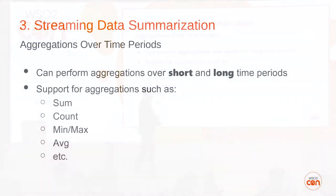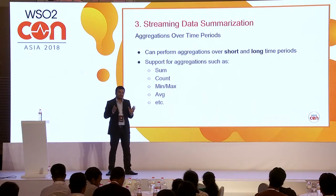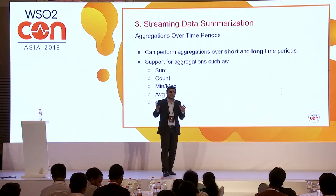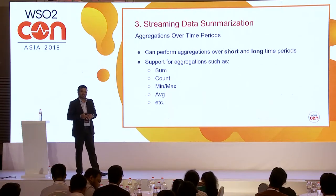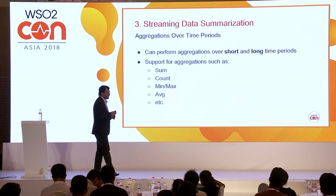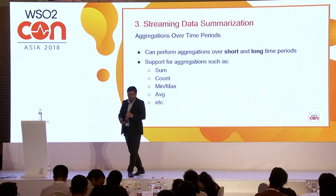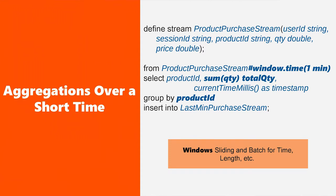The next pattern is streaming data summarization. There are two levels: aggregation over a short time period and over a long time period. Supported aggregation types include sum, count, min, max, average, and standard deviation. For short-time aggregation, we use the concept of a window — a grouping of incoming events either by count (length window) or by time (for example, last one minute).